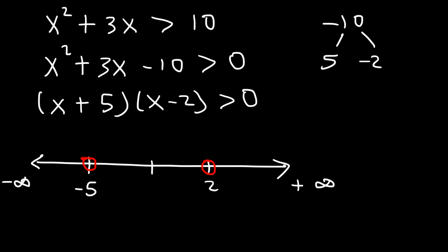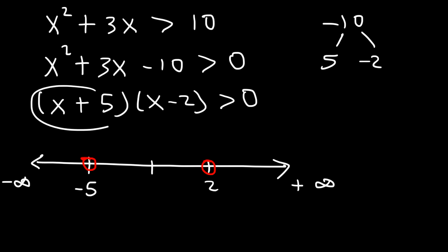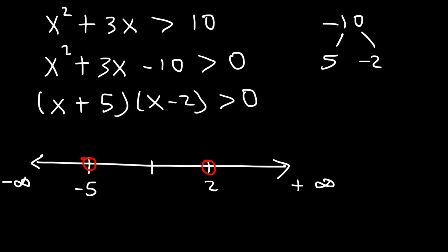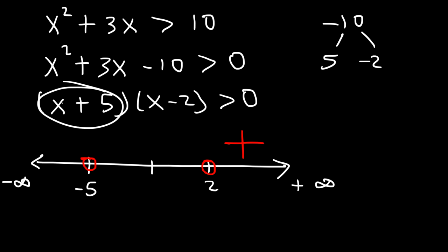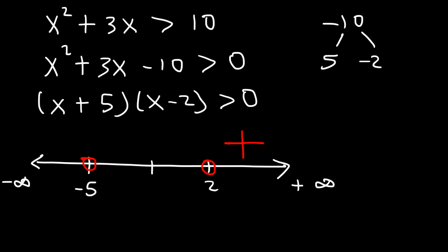Let's start with the region between 2 and infinity — let's try 3. Now 3 plus 5 is positive and 3 minus 2 is also positive. Multiplying two positive numbers gives a positive result. Now let's pick a number between negative 5 and 2 — let's try 0. Zero plus 5 is positive, and 0 minus 2 is negative. A positive times a negative gives a negative number.